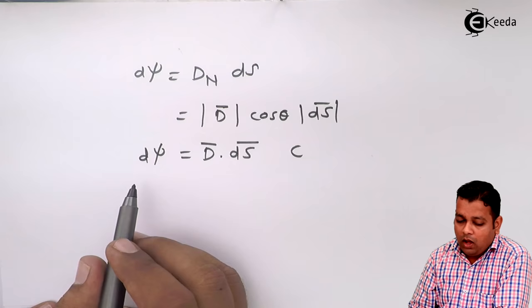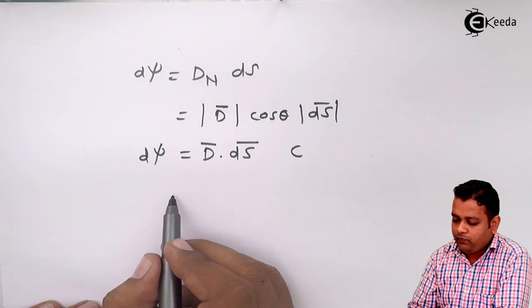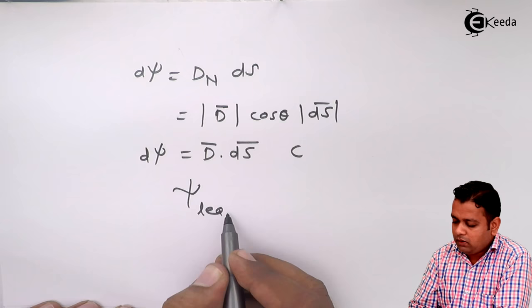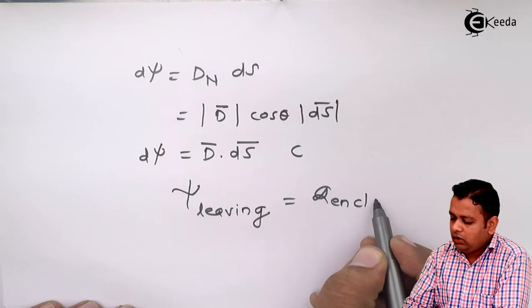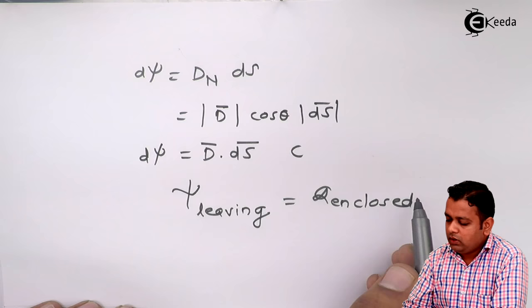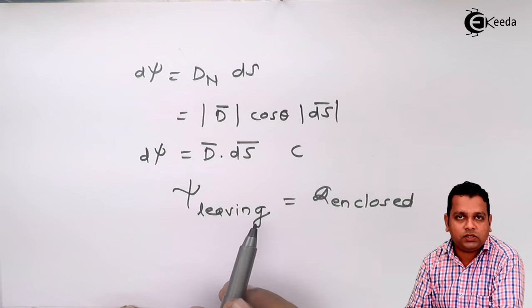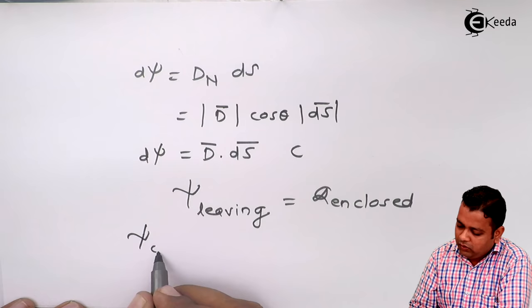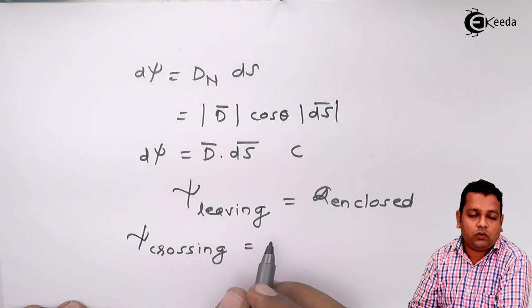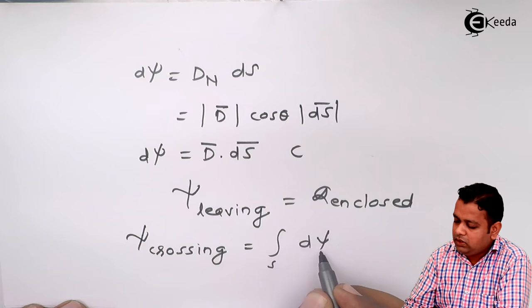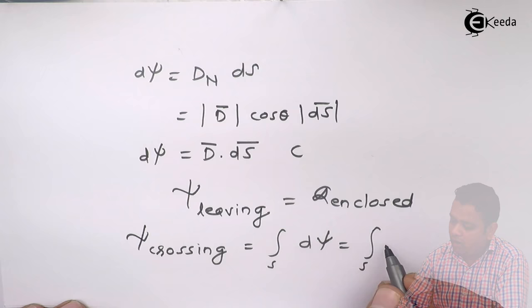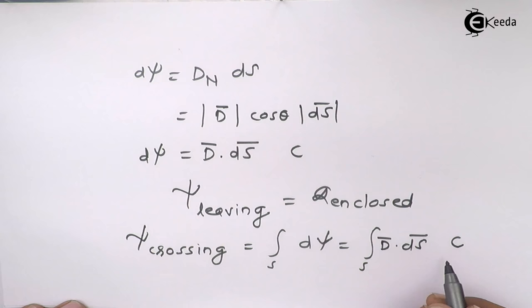According to the statement of Gauss's law, the flux leaving can be represented as ψ leaving equals Q enclosed. The amount of charge inside the region is equal to the amount of flux lines leaving from that region crossing the surface area of that closed surface. The flux lines crossing the wall of that region are given by the surface integral of dψ. Hence we substitute: surface integral of D̄ dot ds̄. The complete flux crossing is given by the surface integral D̄ dot ds̄, measured in Coulombs.